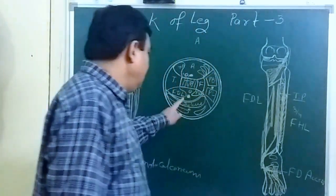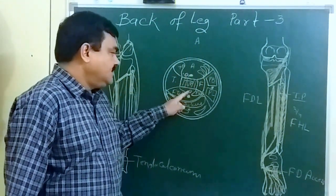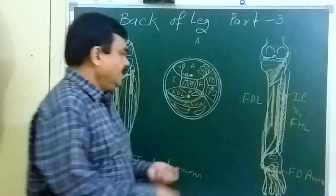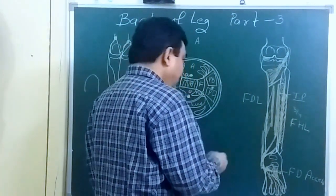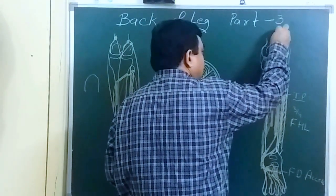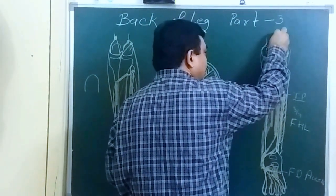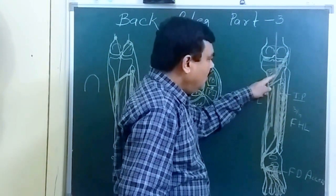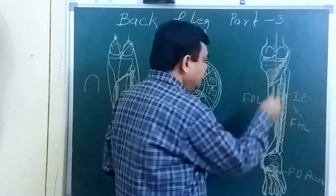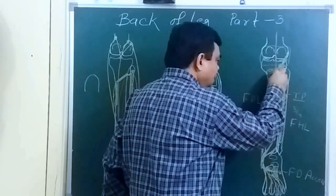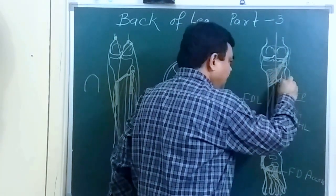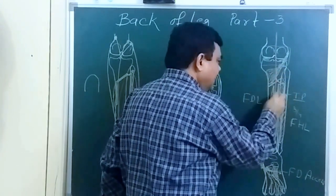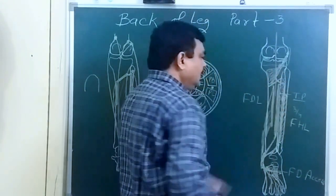Here you can see the posterior tibial artery and the popliteal artery. At the level of the lower border of the popliteus muscle, the popliteal artery divides into two branches: the anterior tibial and the posterior tibial.